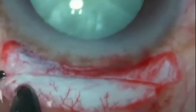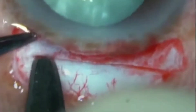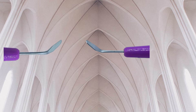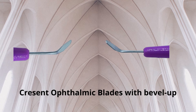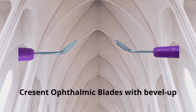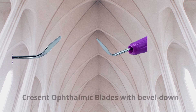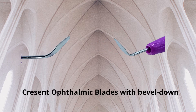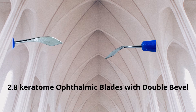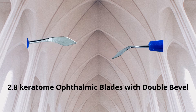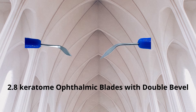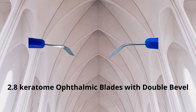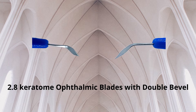A blunt keratome could cause stripping of the Descemet's membrane. Crescent blades are available in both bevel-facing-up and bevel-facing-down orientations. Similarly, keratomes are available in different sizes and bevel shapes. The appropriate blades should be used as per need and expertise.